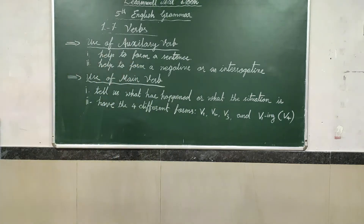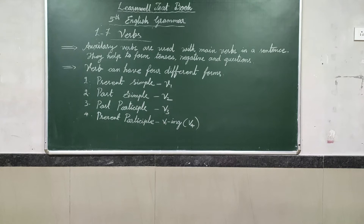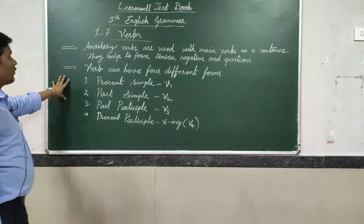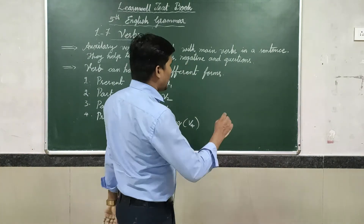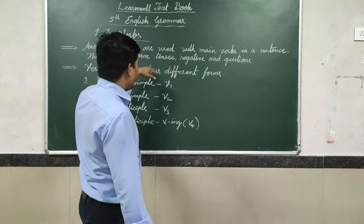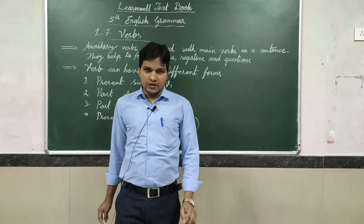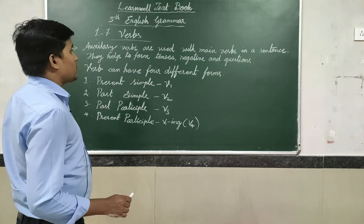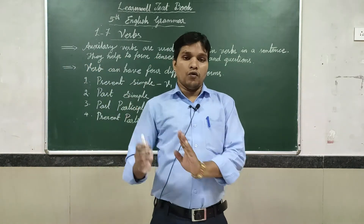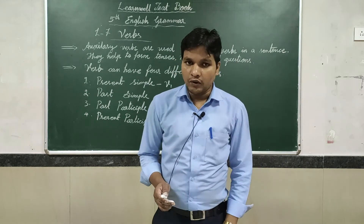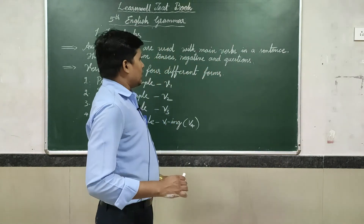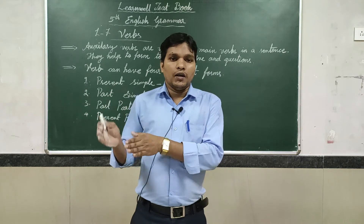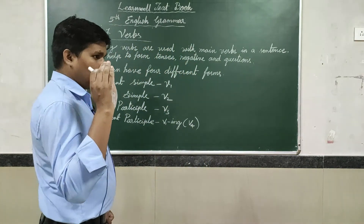Auxiliary verbs are used with the main verb in a sentence. They help to form tense, negatives, and questions. Generally, the auxiliary verb comes first, then the main verb follows — it is very easy to identify. When you make a question, the auxiliary verb comes at the front of the sentence.